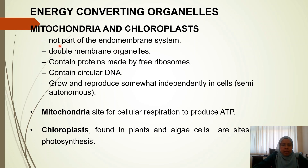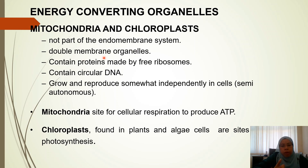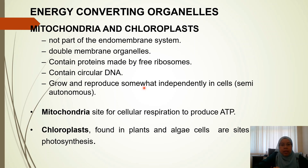Another point for both organelles: they contain proteins made by free ribosomes and contain circular DNA. So they have their own ribosomes and their own DNA, meaning they can produce their own enzymes. The mitochondria is the site for cellular respiration, producing chemical energy — most commonly ATP.